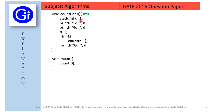Next we have the declaration: static int d = 1. Since d is a static variable it is declared only once, so d equals 1. After that we have a printf statement printing n, whose value is 3, so we print 3 to the output. Then we print d, whose value is 1, so we print 1 to the output.